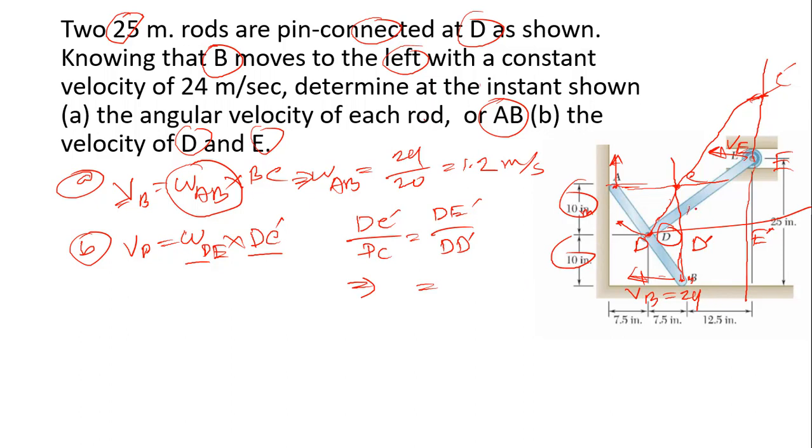DC is calculated from the rectangular geometry: this is 10 and this is 7.5, so DC equals 12.5. Then, 12.5 times DE prime (which is 20) divided by DD prime (which is 7.5) gives us 33.33 meters.